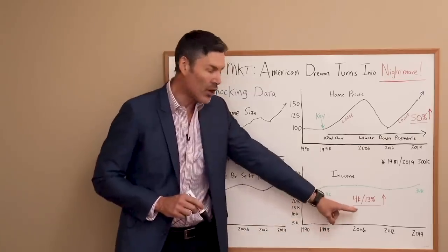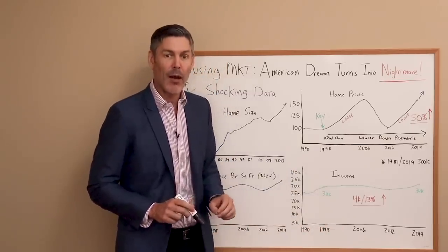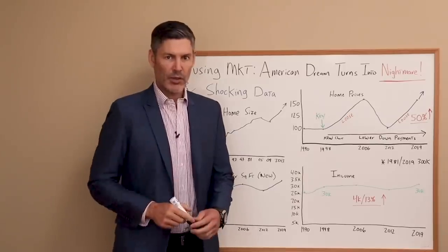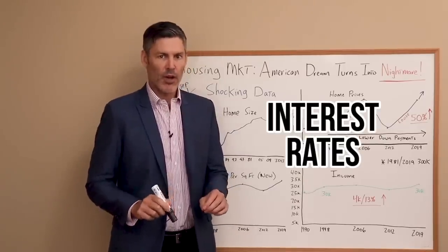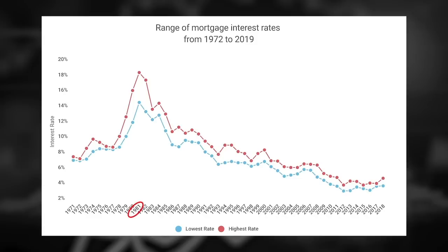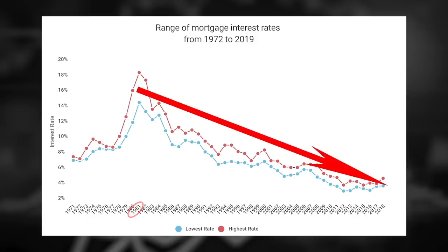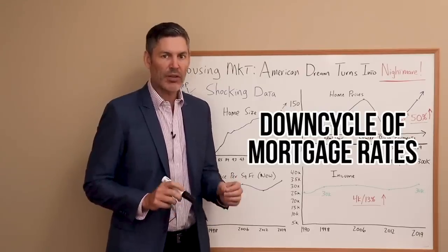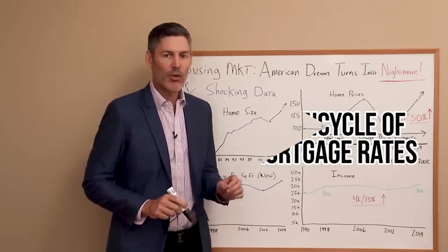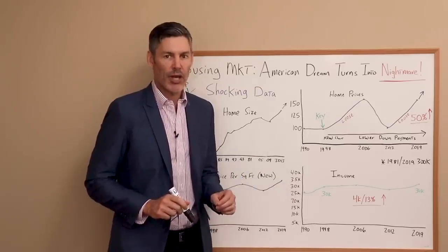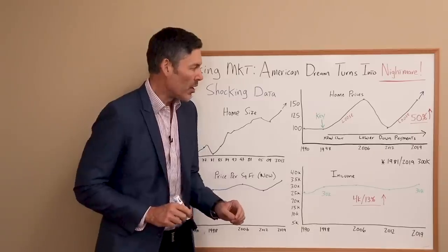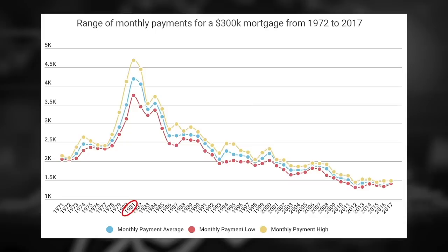But home prices from 1998 to 2019 have gone up by over 50%. So how on earth can that happen? How can incomes only go up by 13% but prices go up by 50%? As most of you would guess, it starts with interest rates. Mortgage rates since 1981 have gone down consistently, so for the past 40 years we've been in a down cycle of mortgage rates.